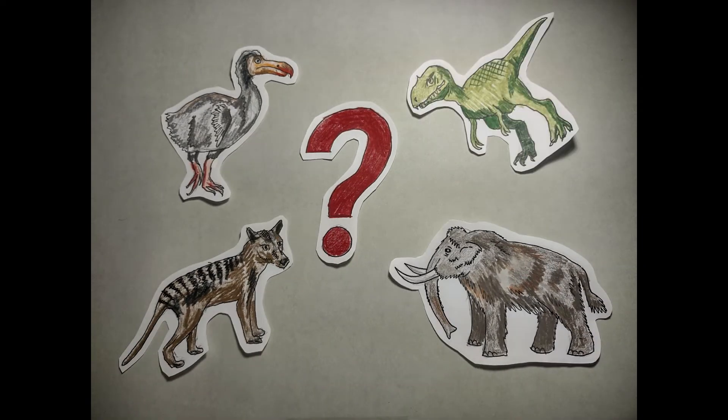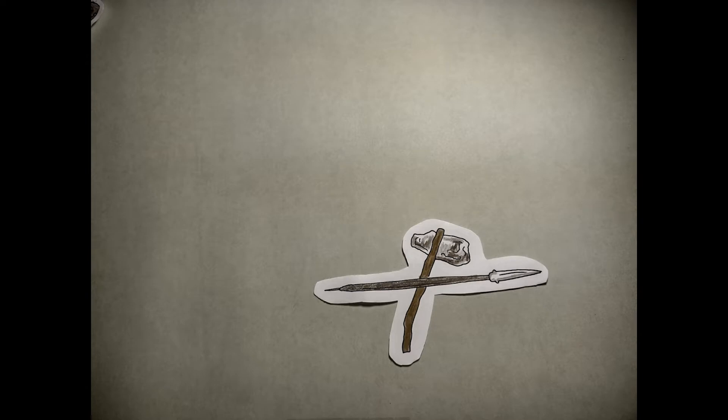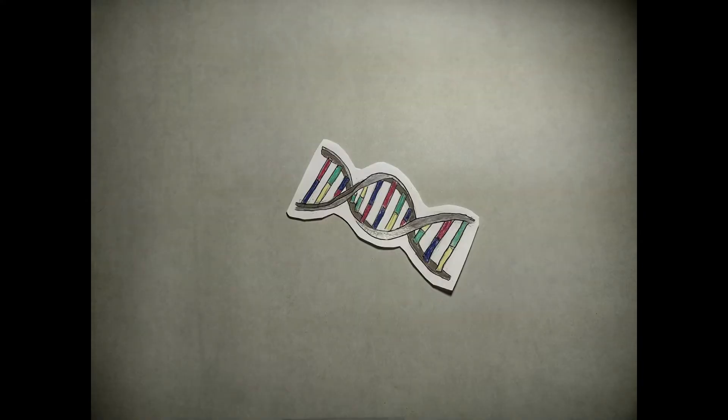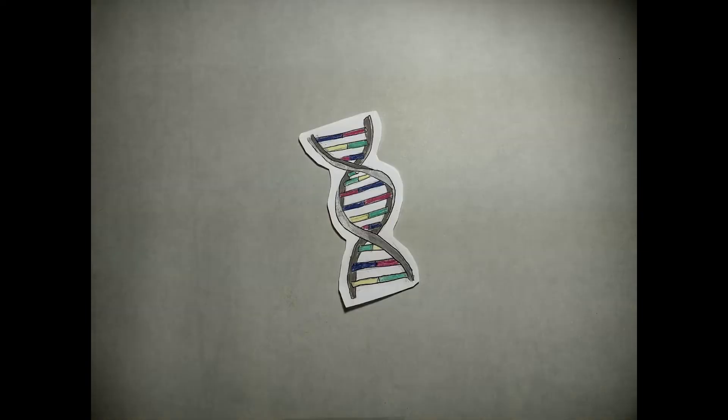Why do species go extinct? Is it because of hunting by humans? Climate change? Falling meteors? Well, sometimes the answer lies in the long and complicated DNA sequence that encodes everything about an organism – its genome.